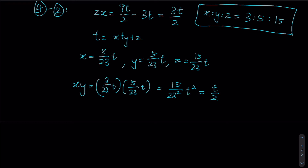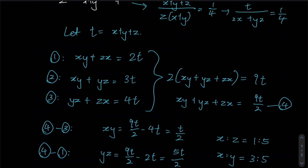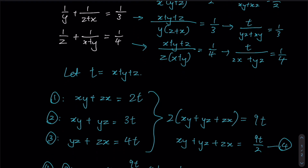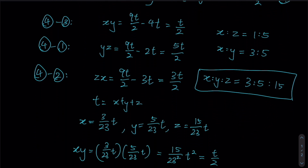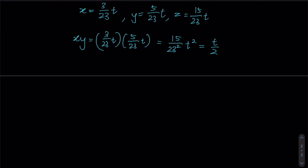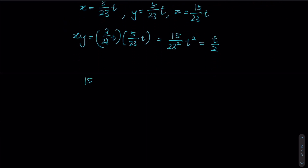Before dividing both sides by t, we must confirm t cannot be zero. Since x, y, and z cannot be zero in the original equations, their sum t cannot be zero either. So we can safely divide both sides by t, giving 15 over 23 squared times t equals one half. Rearranging gives t equals 23 squared over 30.